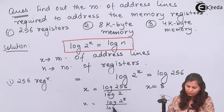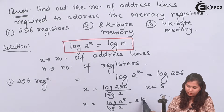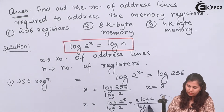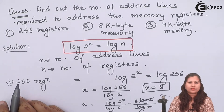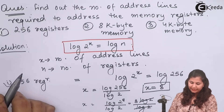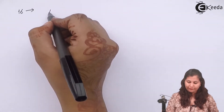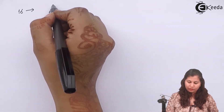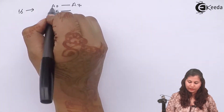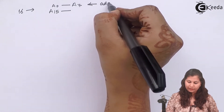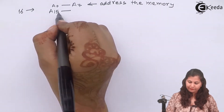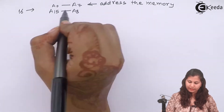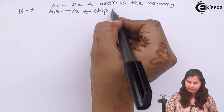We have 8·log(2) / log(2), which cancels, so x = 8. Therefore, 8 address lines are used to address the 256 registers. Now, since we have 16 total address lines (A15 to A0) and we only need 8, lines A0 to A7 are used to address the memory registers, and A15 to A8 are connected to the chip select signal.